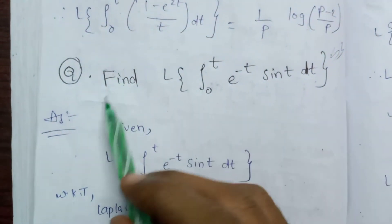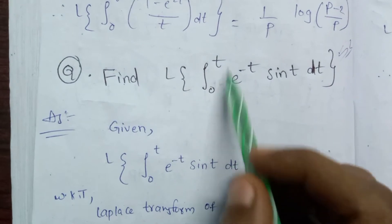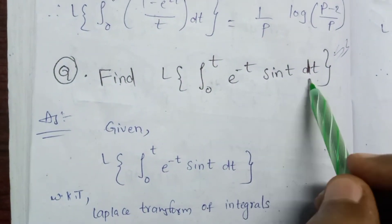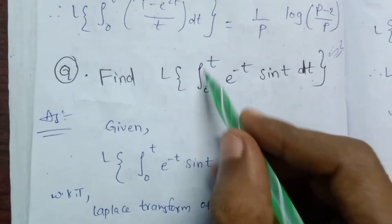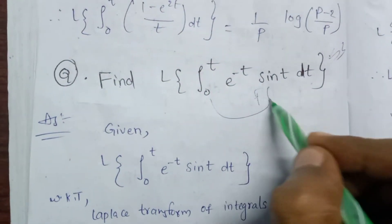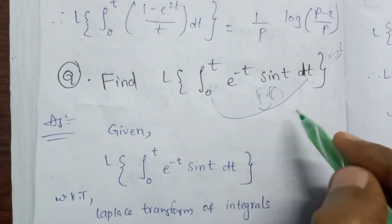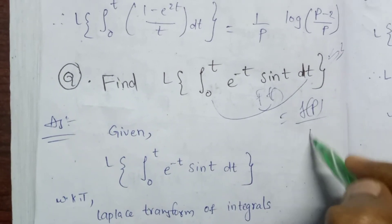This simple one is find integration zero to t e power minus t sin t into dt. We have to use the Laplace transform of integration zero to t f of t into dt formula, which gives f of p divided by p.